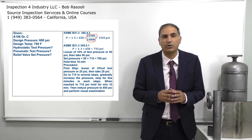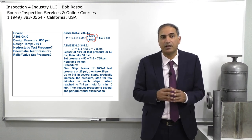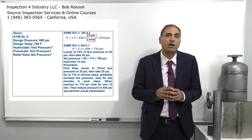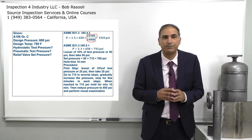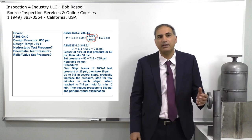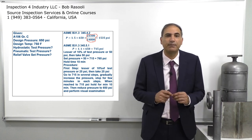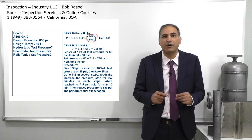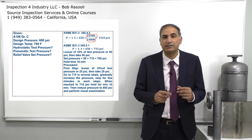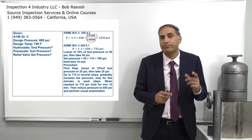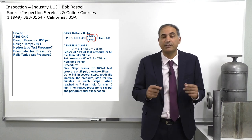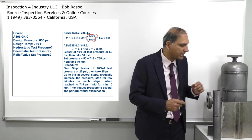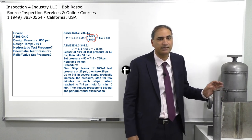The hold time is 10 minutes. For the first step, take the lesser of 10% of the test pressure or 25 psi. Ten percent of 715 is 71.5 psi, so 25 psi is less — we take 25 psi. Then we gradually increase to the full test pressure of 715 psi.